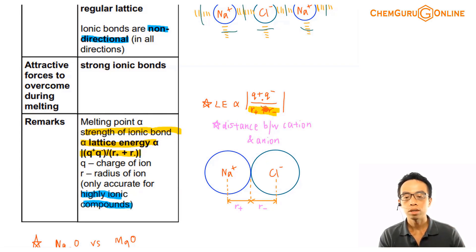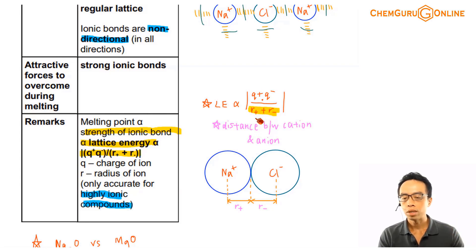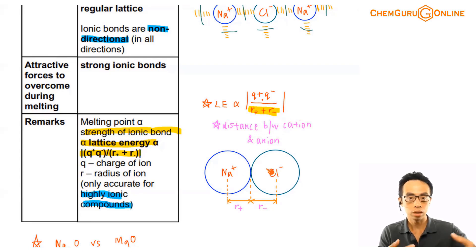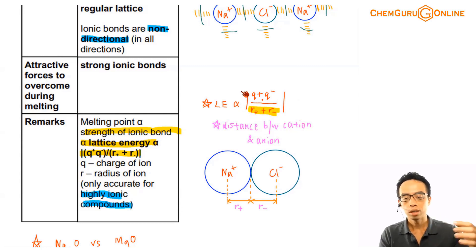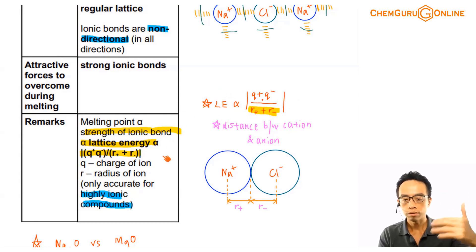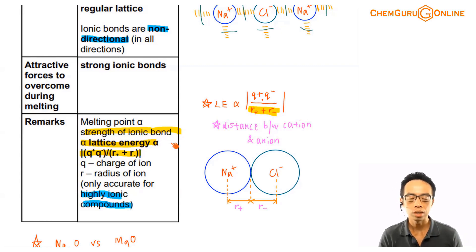Conversely, if I consider the denominator — the distance between the cation and the anion — if R⁺ or R⁻ is bigger, then the distance between the cation and the anion will be greater. If they are further away from each other, then the attraction will be weaker and the ionic bond will be weaker. So a bigger denominator means the magnitude of the lattice energy decreases, and the strength of the ionic bond also decreases. It's intuitive and actually quite easy.